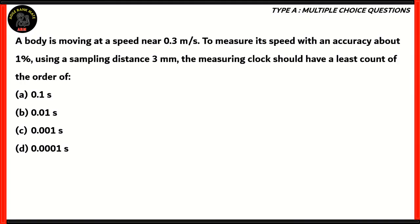Now, let's look at another question. A body is moving at a speed which is nearly 0.3 meters per second. To measure its speed with an accuracy about 1% using a sampling distance of 3 millimeters, the measuring clock should have a least count of the order of 0.1 seconds, 0.01 seconds, 0.001 seconds, or 0.0001 seconds. So, which of these is the correct option?